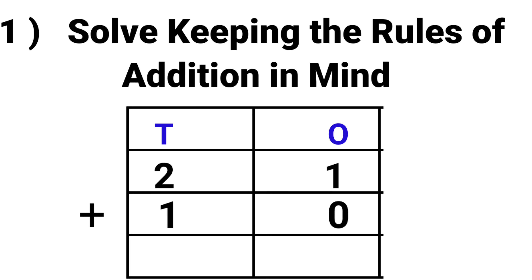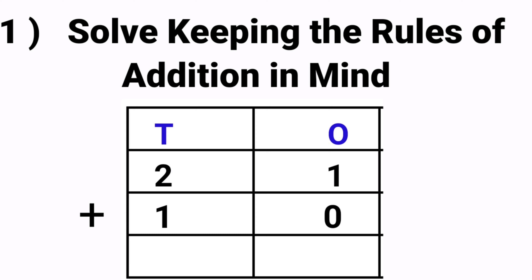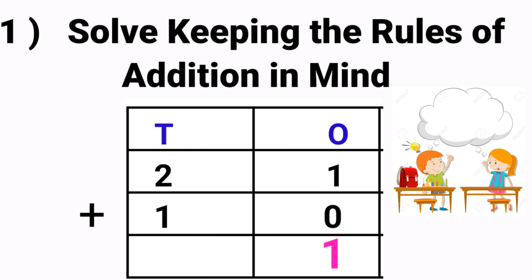The second one is 21 plus 10. First we add the ones space. 1 plus 0. The sum of 0 and any number is the same number. So the answer is 1. Then 2 plus 1. 2 in the mind and 1 in the finger. 2 after 3. So the answer is 31.